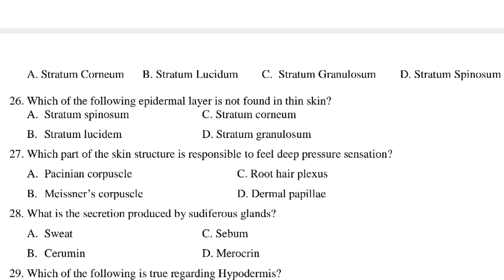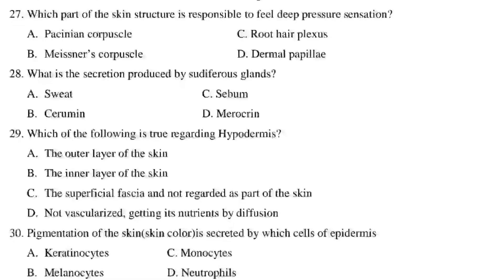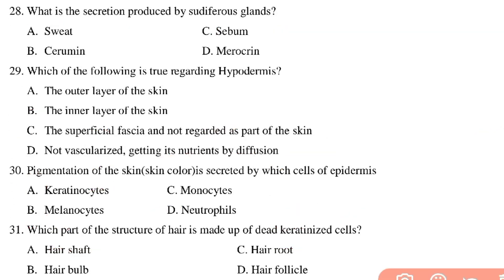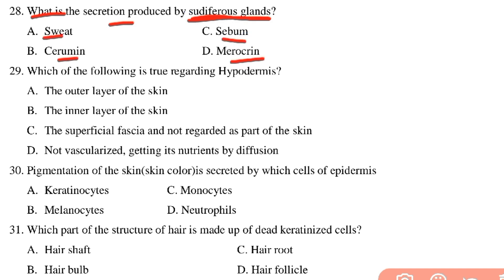What is the secretion produced by sudoriferous glands? The options include sweat, cerumen, serum, and ceruminous secretion. The sudoriferous glands produce sweat.